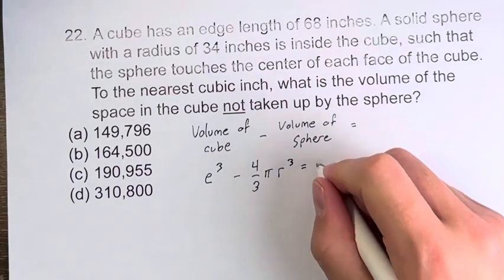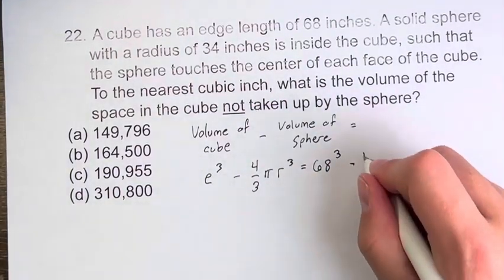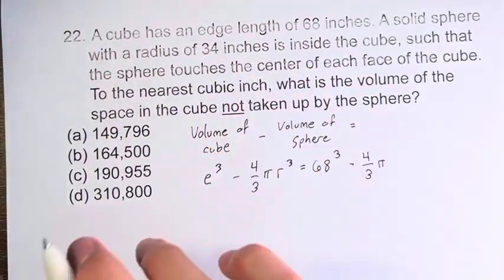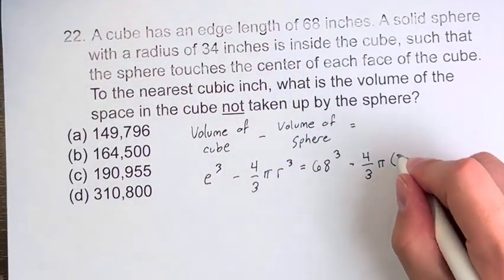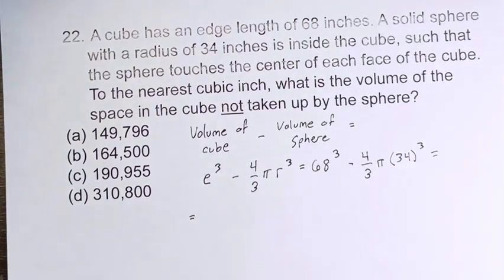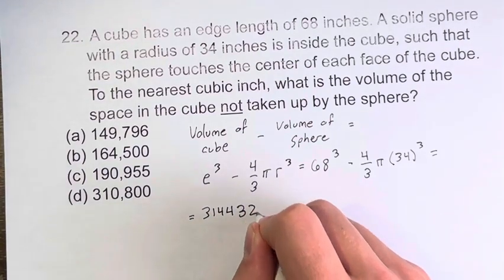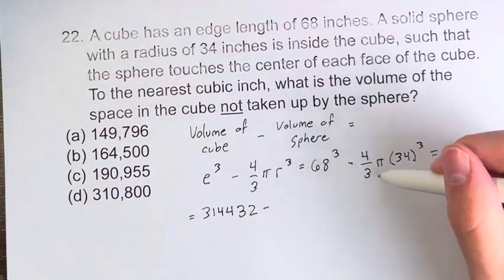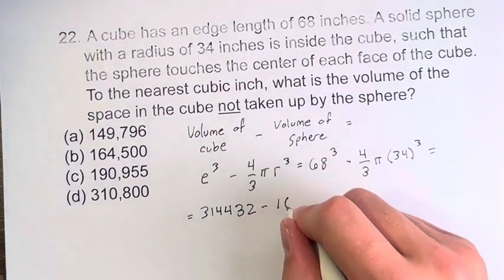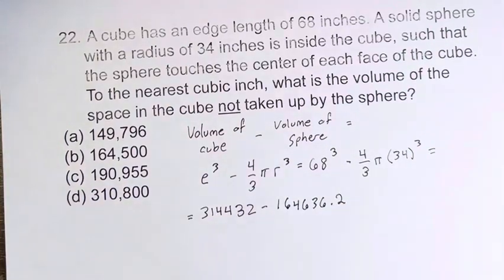The edge length is 68, therefore the volume of the cube is 68 cubed, minus four-thirds pi. The radius of the sphere is 34 inches, so 34 cubed. 68 cubed is 314,432. And four-thirds pi times 34 cubed is roughly 164,636.2.